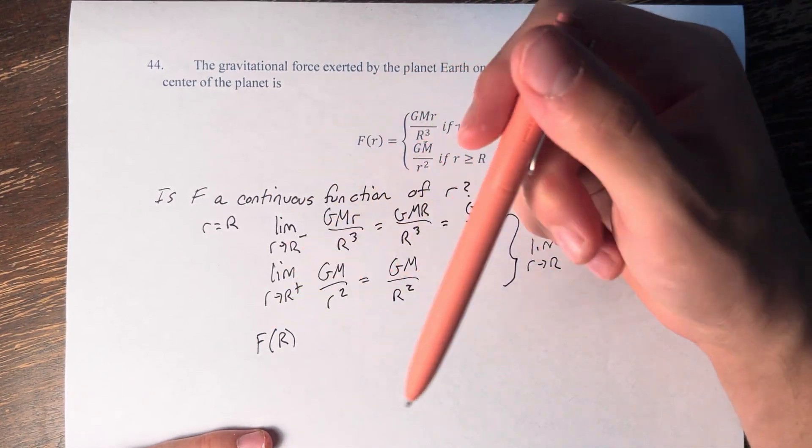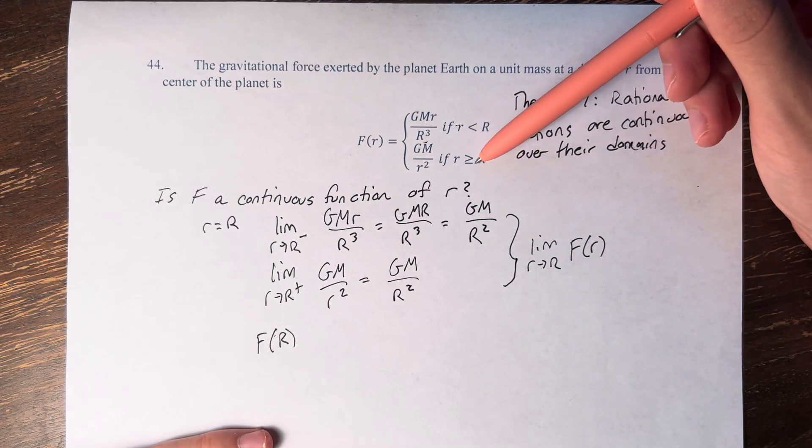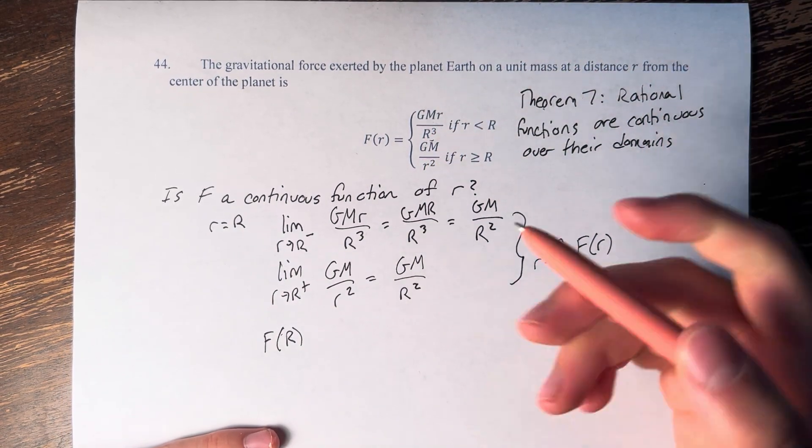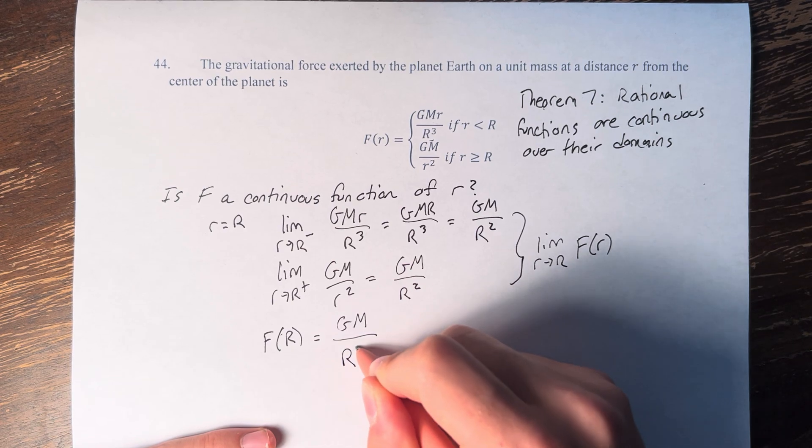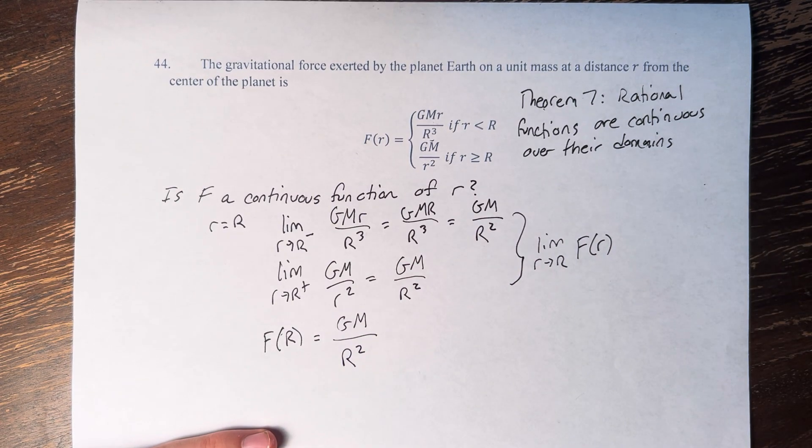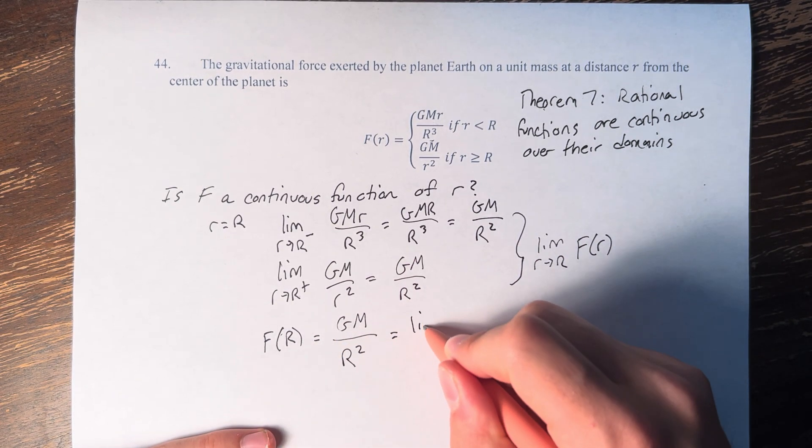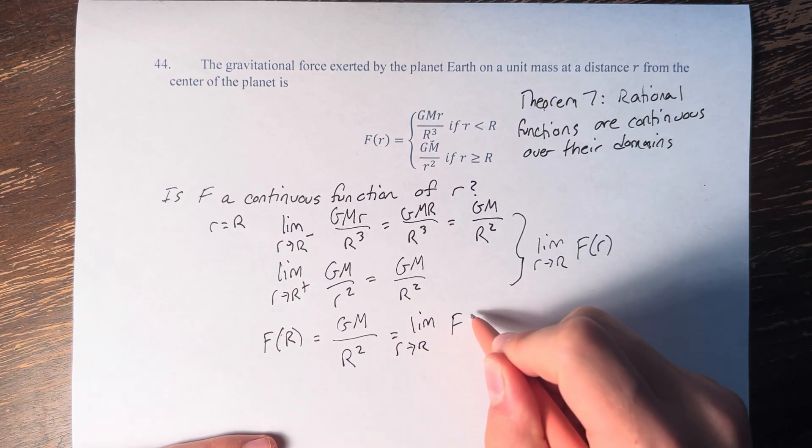If we are actually at the value of big R, this equal sign means that we have to use GM over r squared. So GM over, plugging in, big R squared. And we can see that this is equal to the limit as r approaches R of F(r).